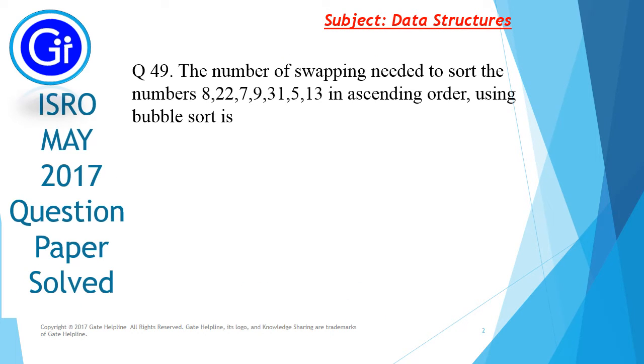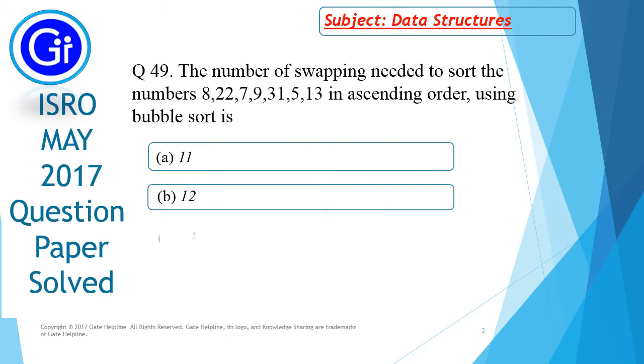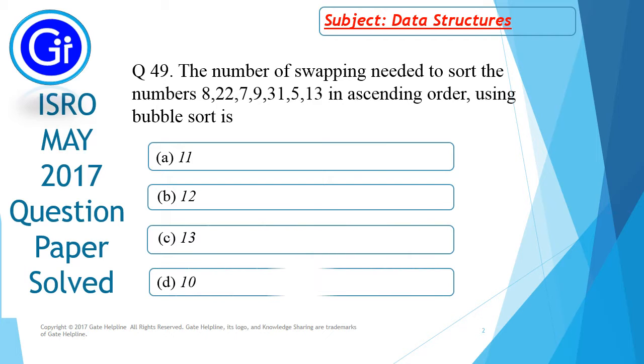Question number 49 is the number of swappings needed to sort the numbers 8, 22, 7, 9, 31, 5, 13 in ascending order using bubble sort. The options are a) 11, b) 12, c) 13, and d) 10.